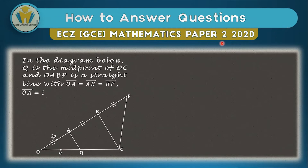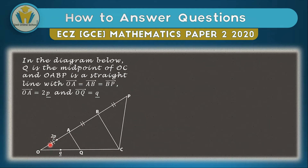The question reads: in the diagram below, Q is the midpoint of OC. This means Q is exactly in the middle of OC, and therefore the value of OQ is the same as the value of QC. They also tell us that OABP is a straight line, meaning the points O, A, B, and P are collinear — simply in the same line. That's a very important property.